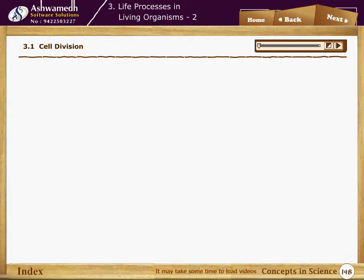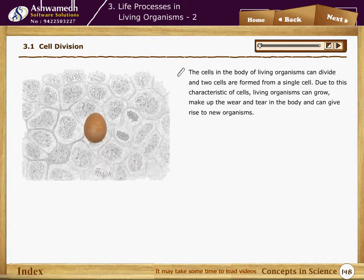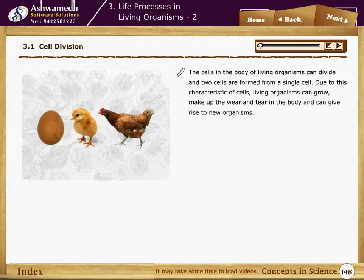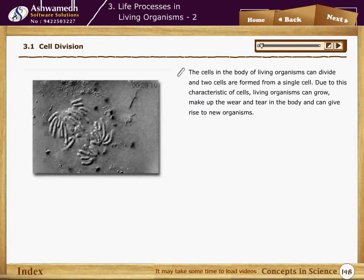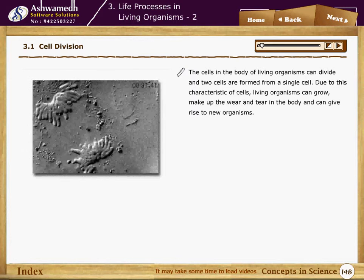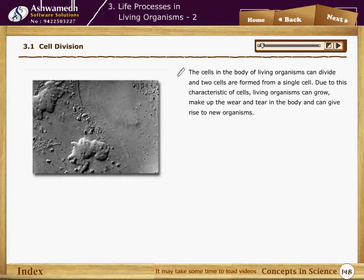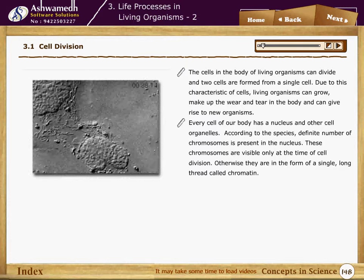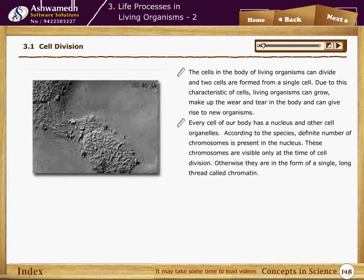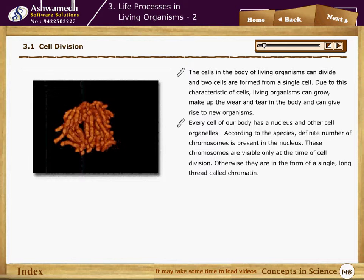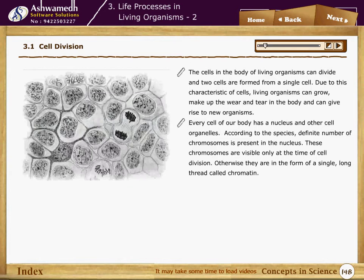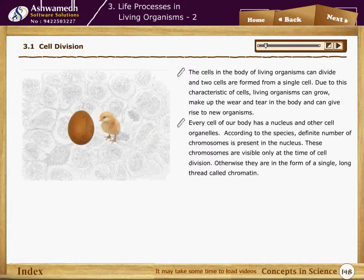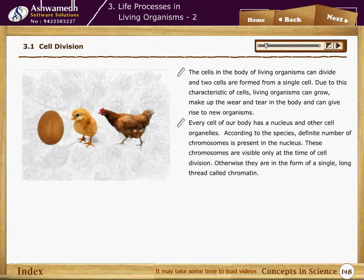Life processes in living organisms: cell division. The cells in the body of living organisms can divide, and two cells are formed from a single cell. Due to this characteristic, living organisms can grow, make up wear and tear in the body, and give rise to new organisms. Every cell in our body has a nucleus and other cell organelles. According to the species, a definite number of chromosomes are present in the nucleus. These chromosomes are visible only at the time of cell division.